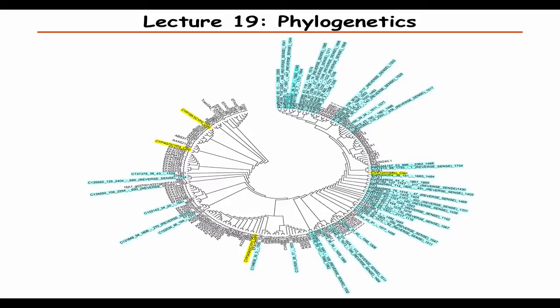Sequences can also be used to create phylogenies. This is based on the idea that there was a common ancestor, and in different species the sequences diverged. By looking at how similar sequences are across different species, you can draw these phylogenetic trees.